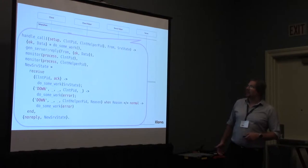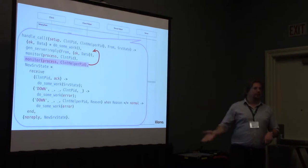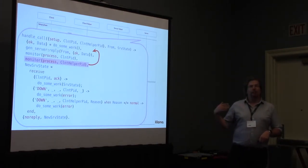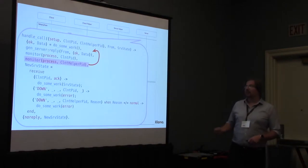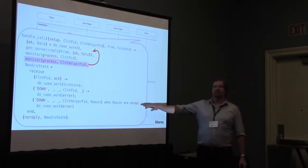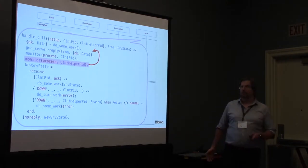The bug is that once the data is sent — the reply is sent — the client helper can terminate any time normally. And if it happens to terminate before we place the monitor, the server will immediately receive the DOWN message with the reason 'no problem' and consider the setup of the protocol successful.